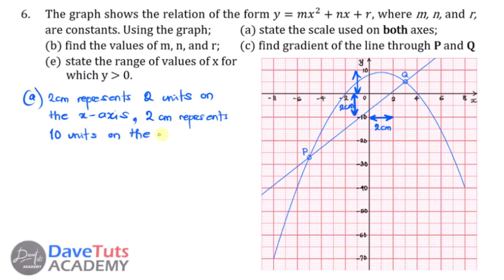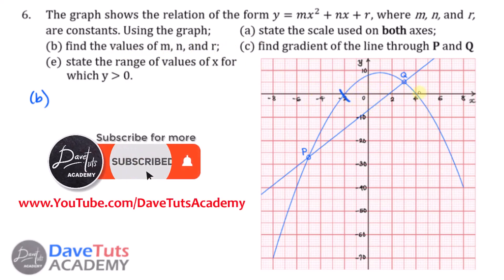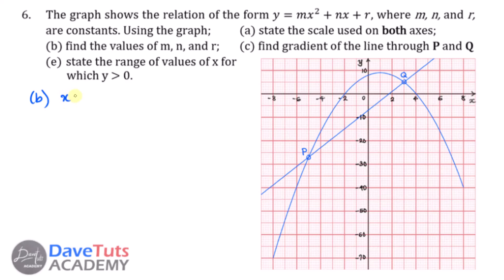So if you are able to state those scales, you are good and your marks will be fine. Now let's look at the second part: finding the values of m, n, and r. Looking at this particular curve, we see it cuts the x-axis at minus 2 and 4. These are the roots of the equation, so x = −2 or x = 4.